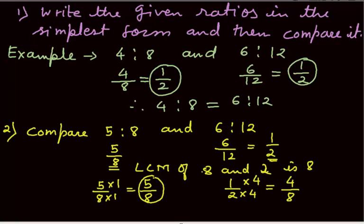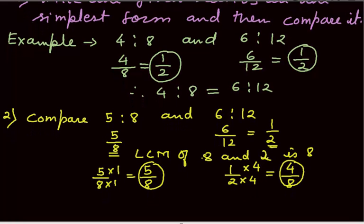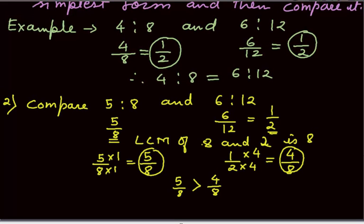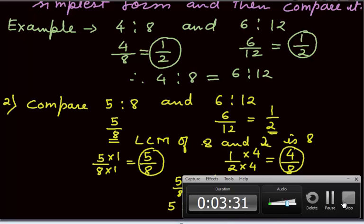Now, here you can see that the new fractions are 5 over 8 and 4 over 8. We can easily compare them. So, 5 over 8 is greater than 4 over 8 which is nothing but 5 is to 8. The ratio 5 is to 8 is greater than the ratio 6 is to 12. Thank you.